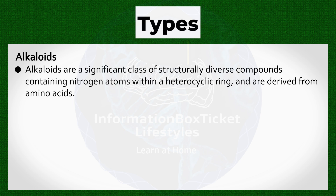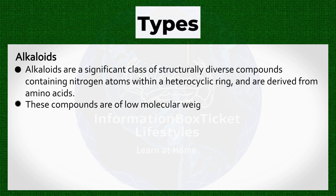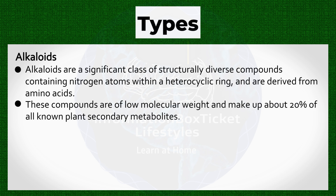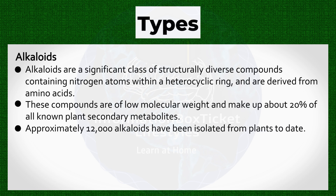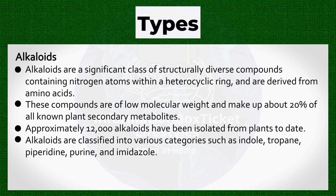Alkaloids are a significant class of structurally diverse compounds containing nitrogen atoms within a heterocyclic ring, and are derived from amino acids. These compounds are of low molecular weight and make up about 20% of all known plant secondary metabolites. Approximately 12,000 alkaloids have been isolated from plants to date. They are classified into various categories such as indole, tropane, piperidine, purine, and imidazole.